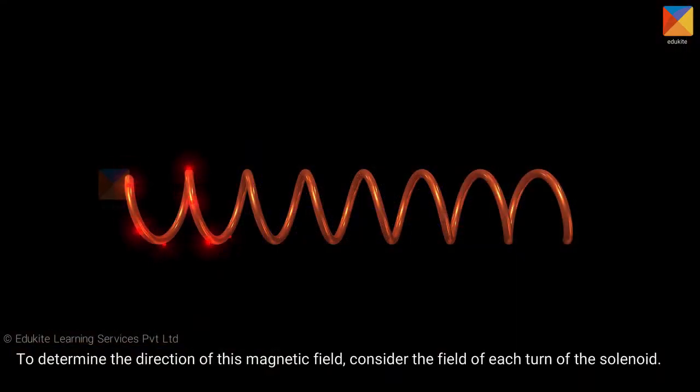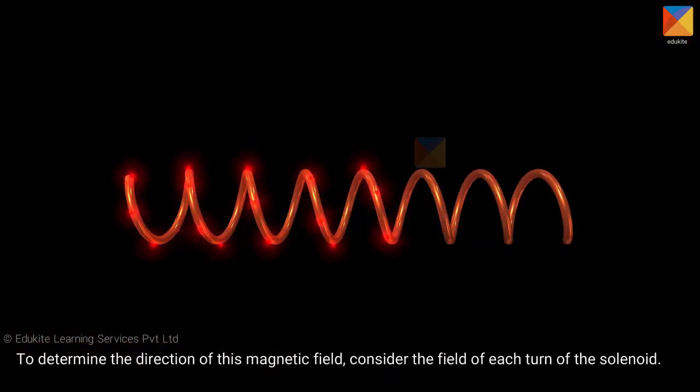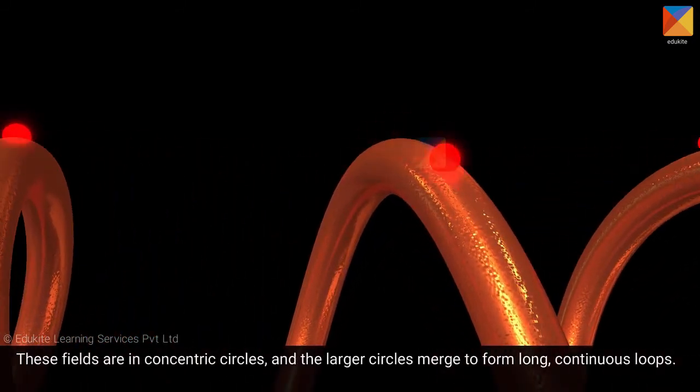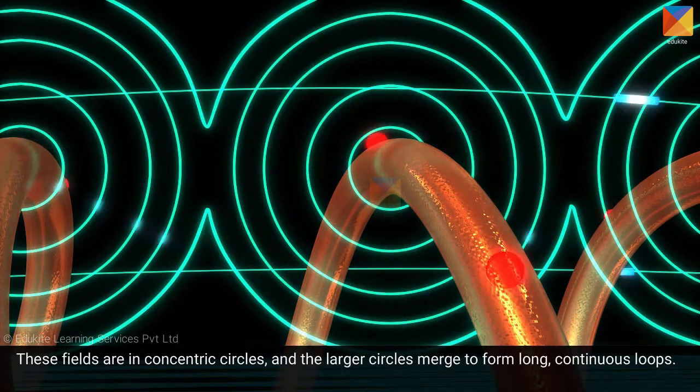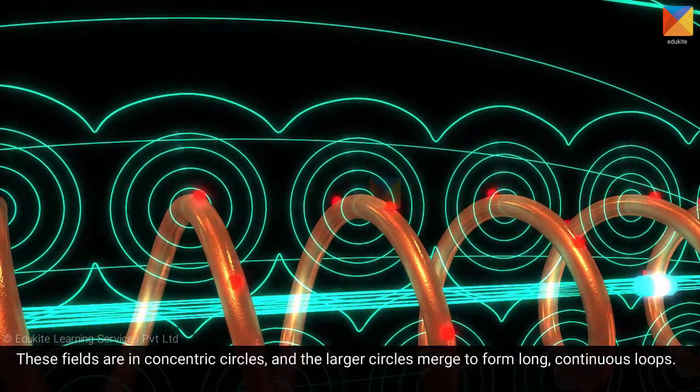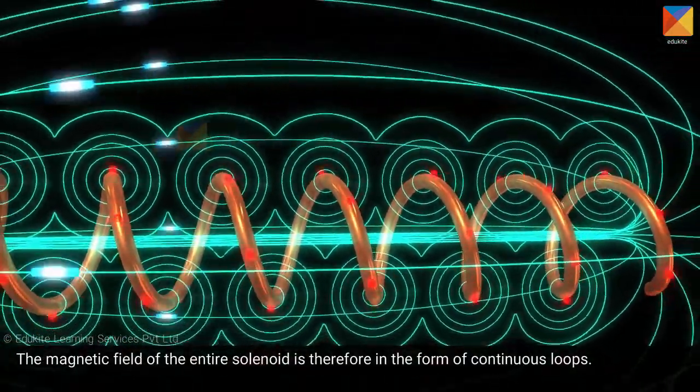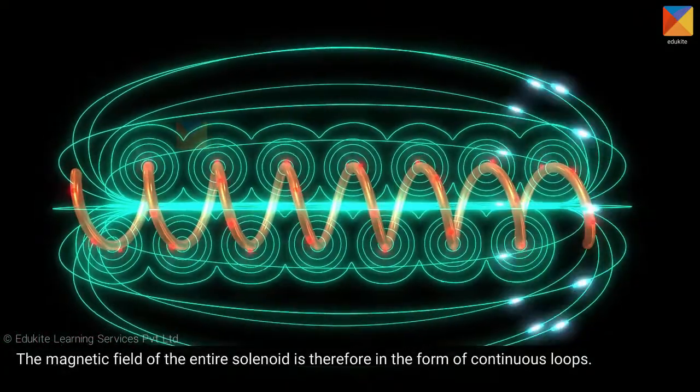To determine the direction of this magnetic field, consider the field of each turn of the solenoid. These fields are in concentric circles and the larger circles merge to form long continuous loops. The magnetic field of the entire solenoid is therefore in the form of continuous loops.